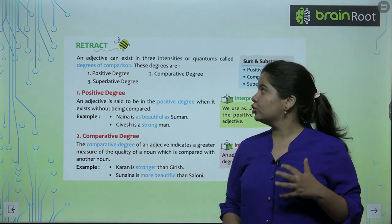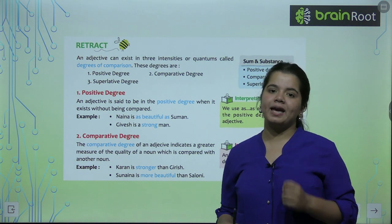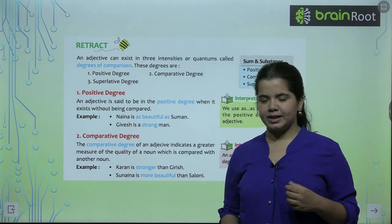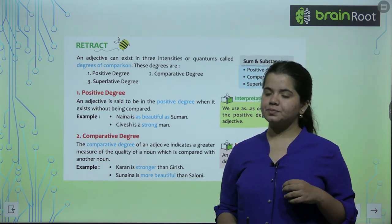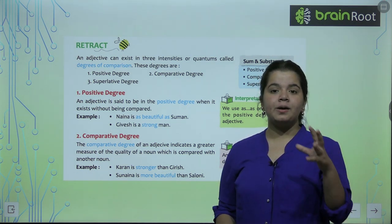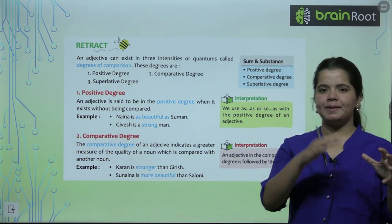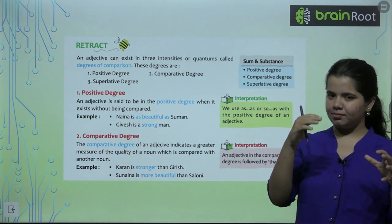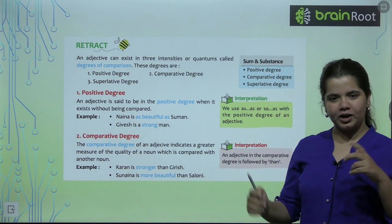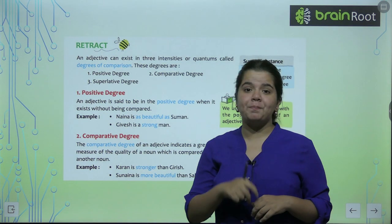So we know that we have to use different words to compare something to a different word. Like good, better, best. So good becomes better, better becomes best. This is our way to do comparison.